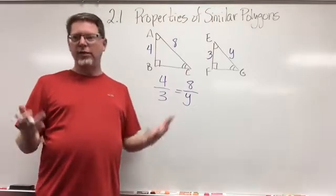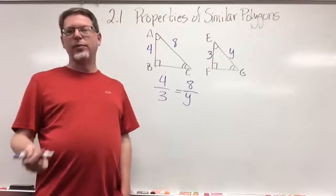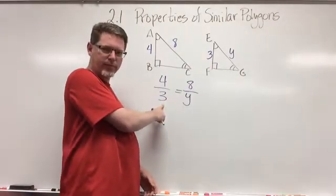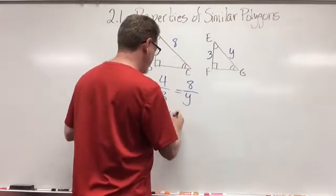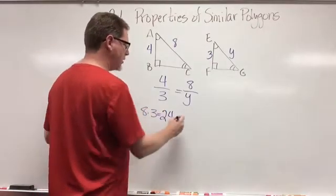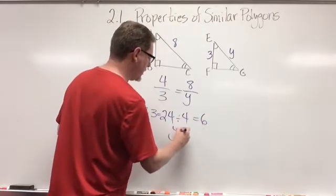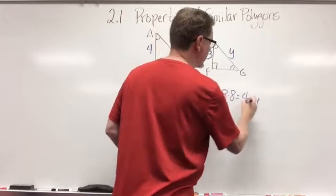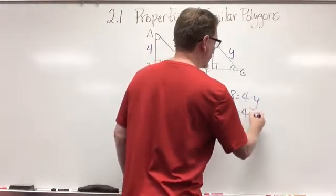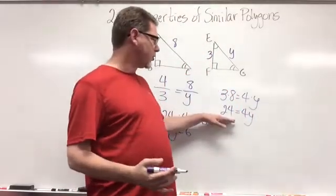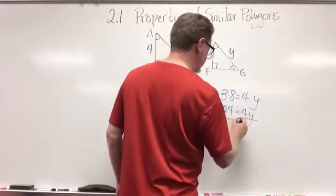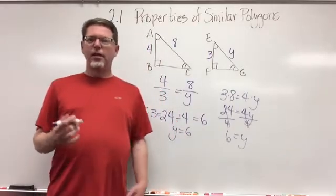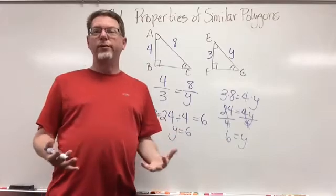To solve the proportion four over three equals eight over y, we cross multiply and divide. Eight times three equals 24, divided by four equals six — so y equals six. The other way: cross multiply to get 3 times 8 equals 4y, which is 24 equals 4y. Dividing both sides by four gives y equals six. You should be writing this in your composition book as notes.